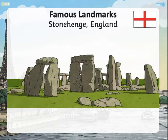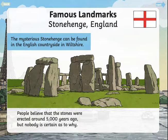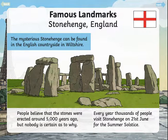Another famous landmark, this time in England, is Stonehenge. If you've been to the south of England, you might have driven past it. The mysterious Stonehenge can be found in the English countryside in Wiltshire. People believe that the stones were erected around 5,000 years ago, but nobody is certain as to why. Every year, thousands of people visit Stonehenge on the 21st of June for the summer solstice. Some people think that perhaps it's for religious ceremonies — ancient ones, something to do with the sun and the way it shines through the different parts.